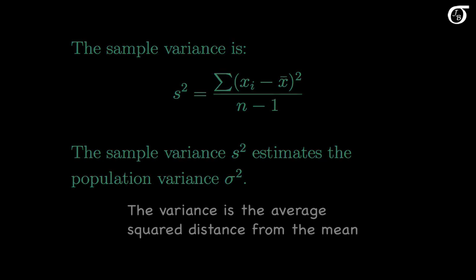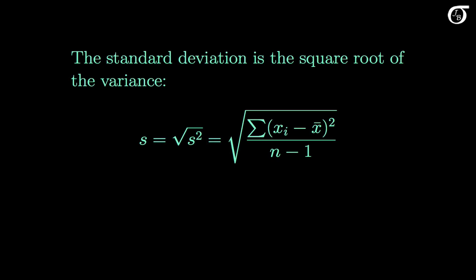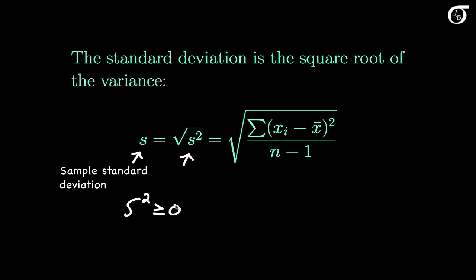By definition, the standard deviation is the square root of the variance. The sample standard deviation s is the square root of the sample variance s². The standard deviation has the same units as the variable — so if measurements are in meters, the standard deviation has units of meters. Both the variance and standard deviation are at least 0, and are equal to 0 only if every observation in the data set is equal. The larger the variance or standard deviation, the greater the variability.